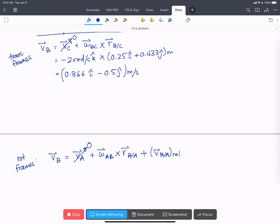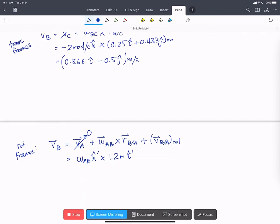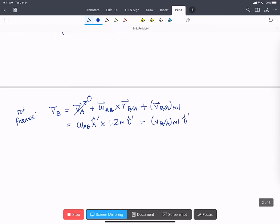The other thing that we know is that RB with respect to A is also only in the I prime direction. So that simplifies our equation a lot. So we know VA is 0. Omega doesn't change whether we use the I or I prime direction because K is always in the same direction. So we'll have omega AB in the K or K prime. We can write it either way. Crossed with 1.2 meters in the I hat prime. Remember we found that D 1.2 meters plus the scalar VB with respect to A relative in the I hat prime direction.